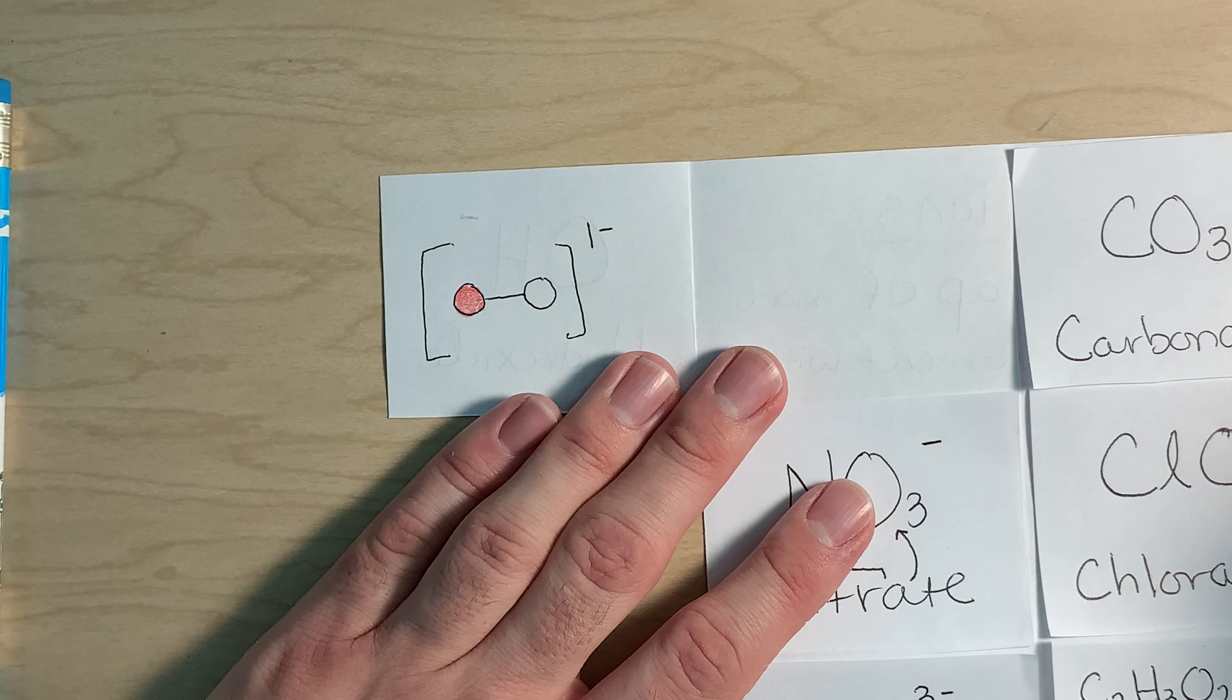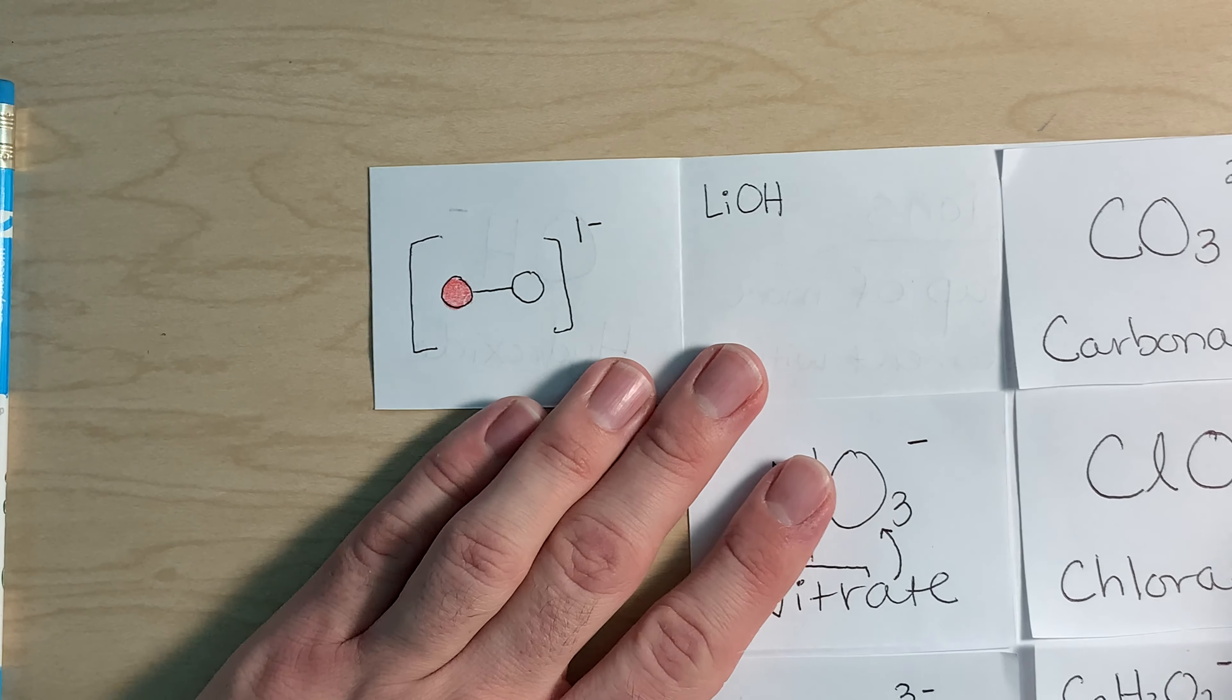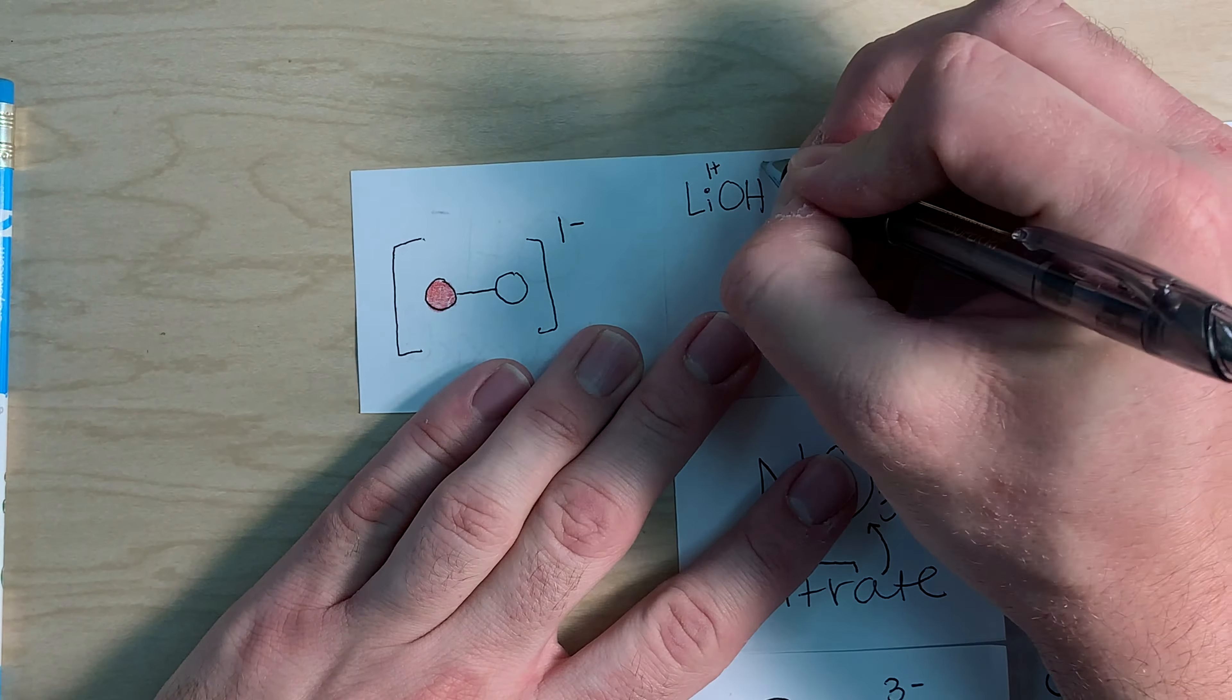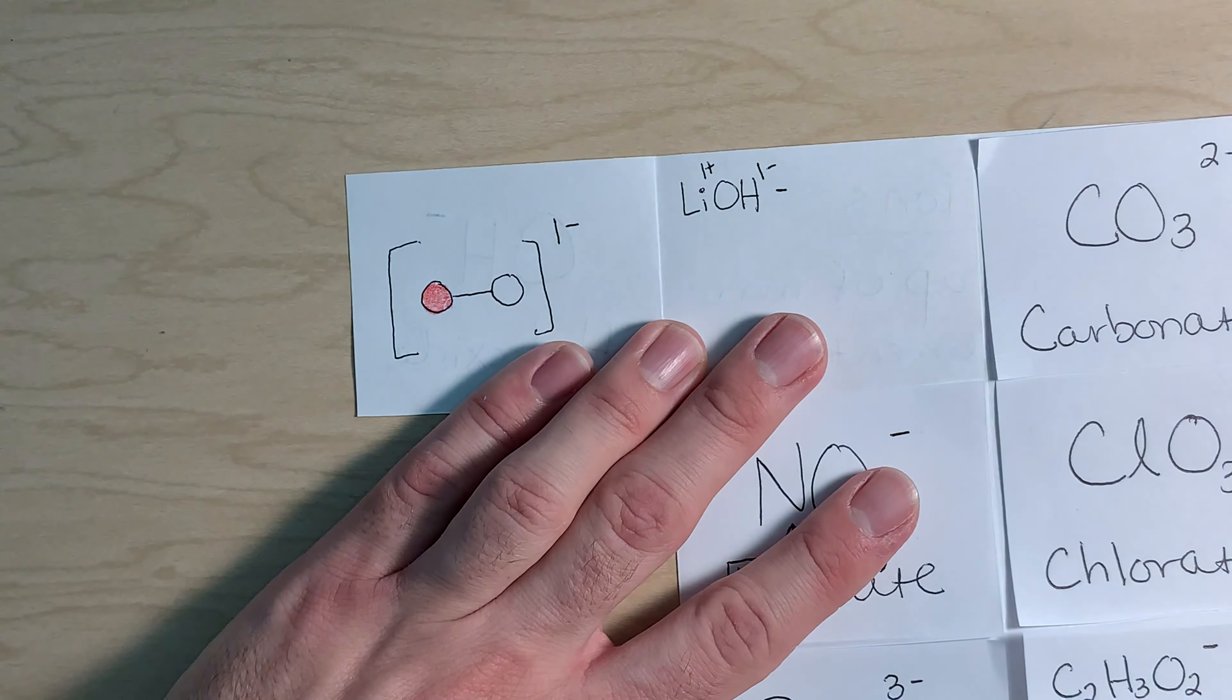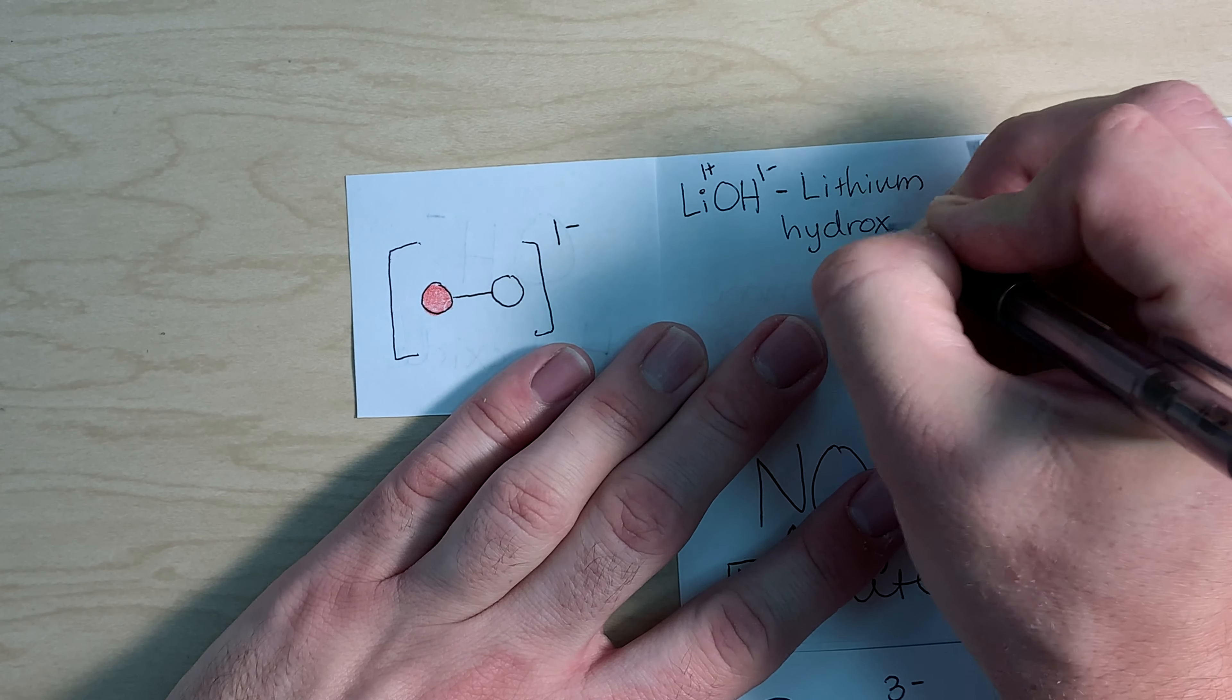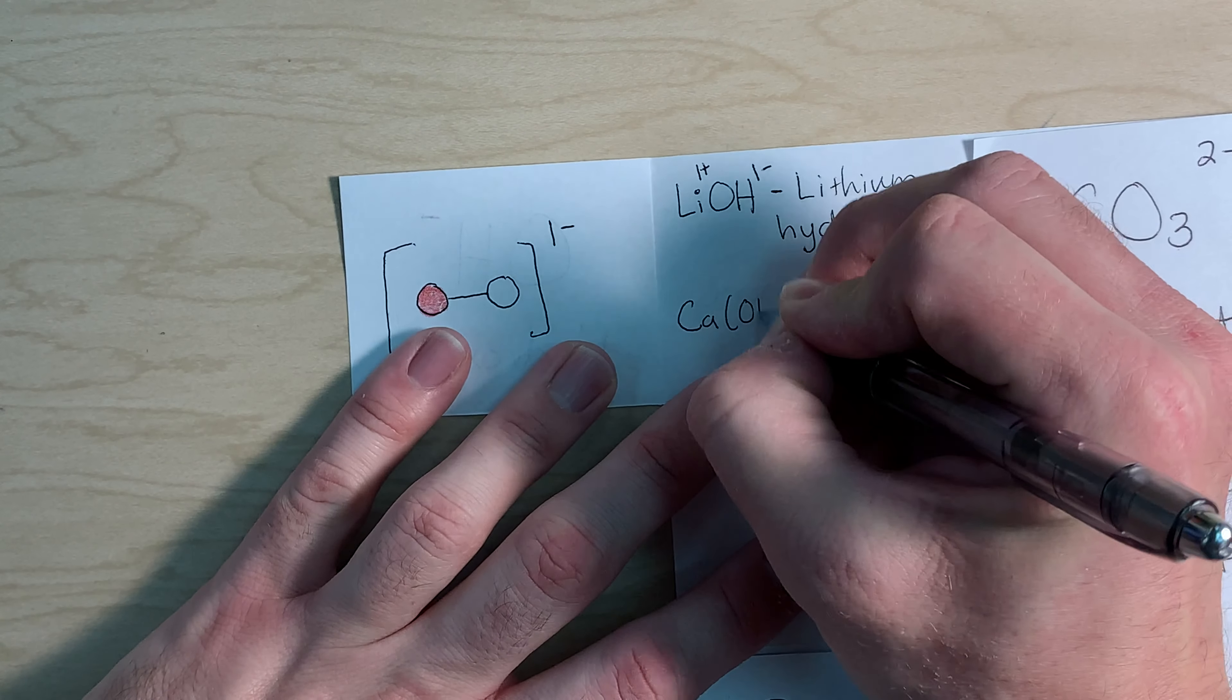All right, so we're going to start getting into naming compounds. I'm just going to throw some out here so we can start to get the idea. But the rest of this week, that is our plan. So using hydroxide, we could have LiOH. Notice that the O and the H are both capitalized. So this would be the chemical formula for this substance. Lithium is in group one. Lithium forms a one plus charge. And we just said hydroxide has a one minus charge. So these two substances together, one plus, one minus, would be attracted to each other.